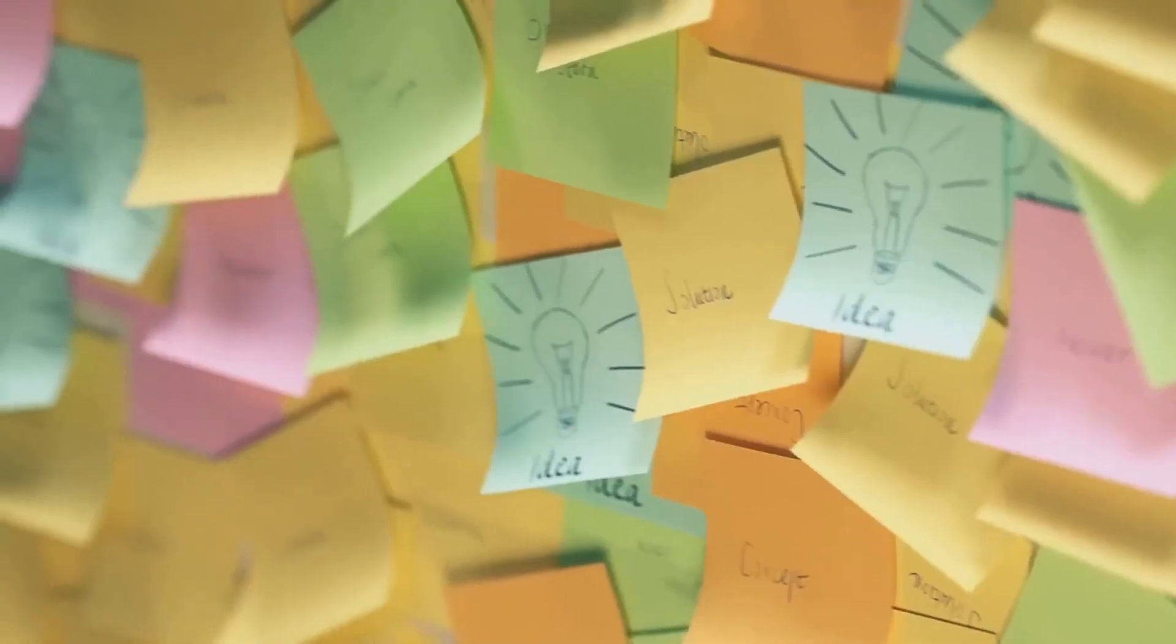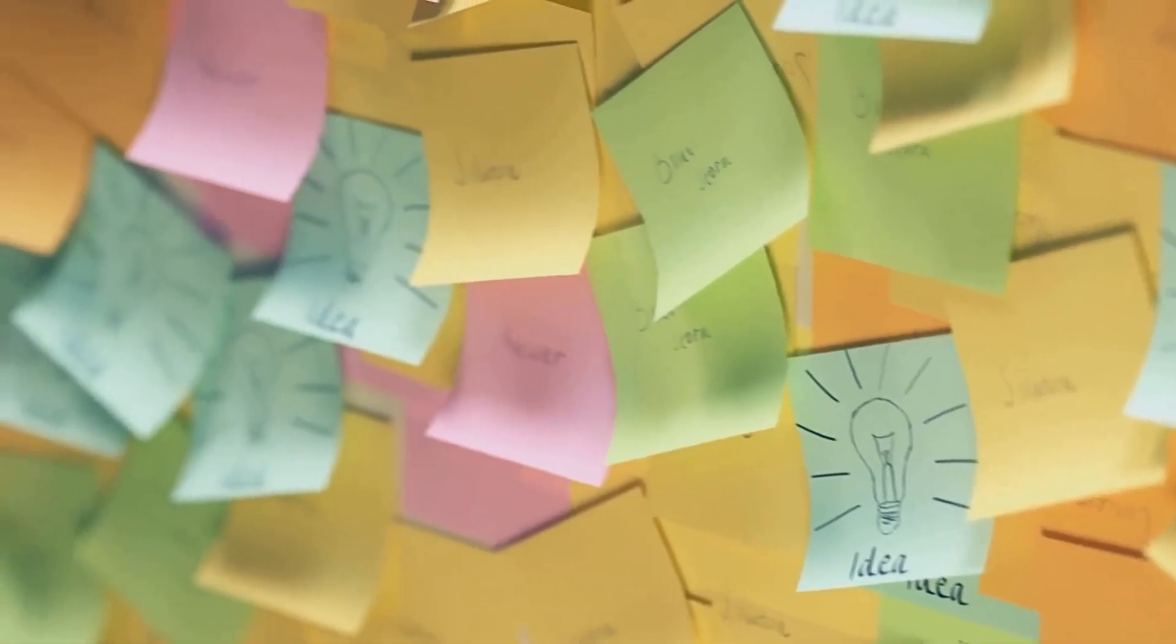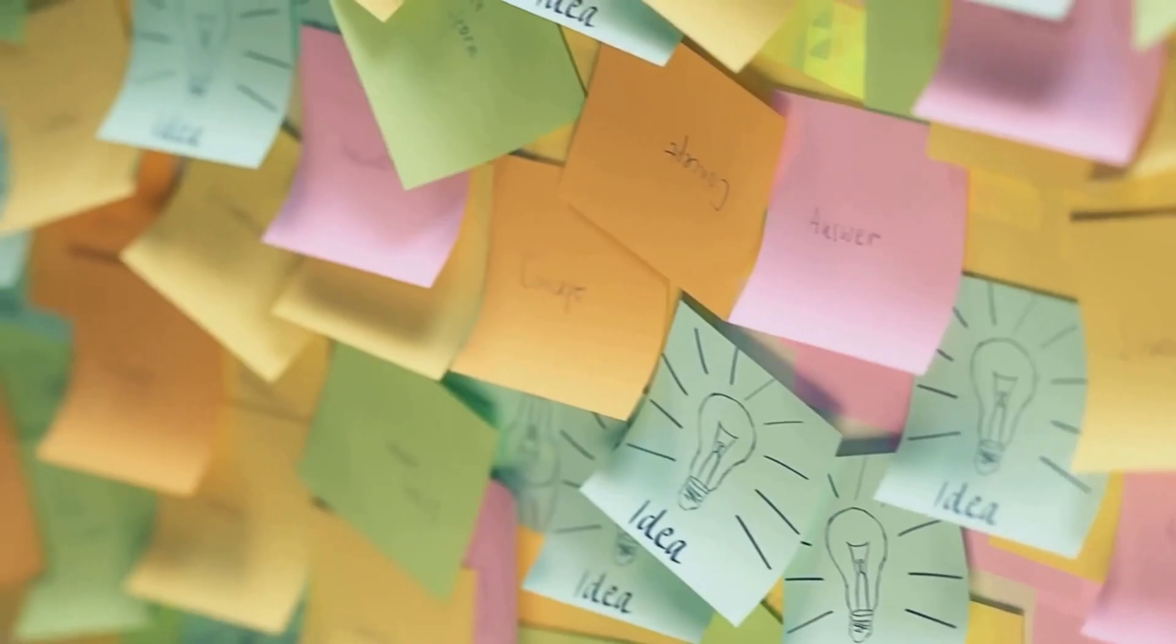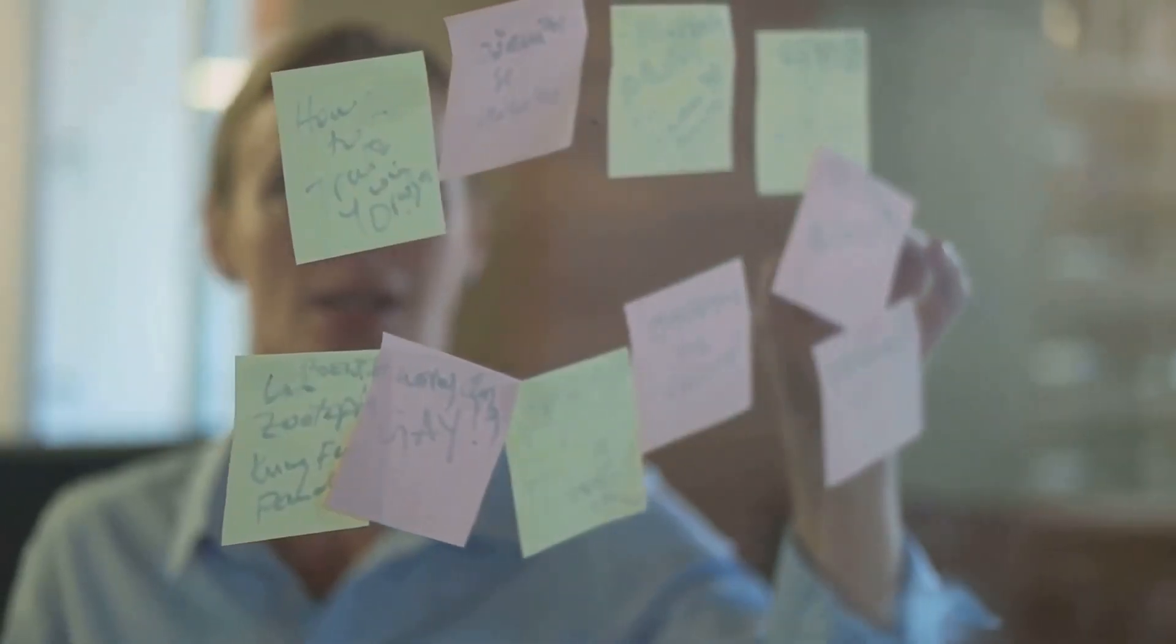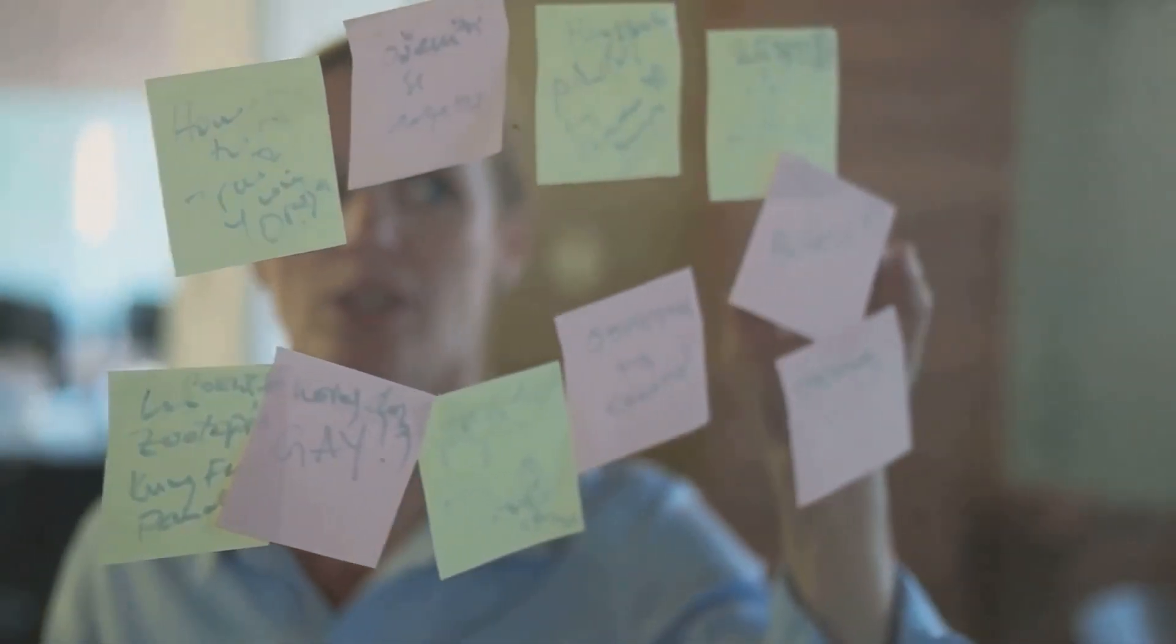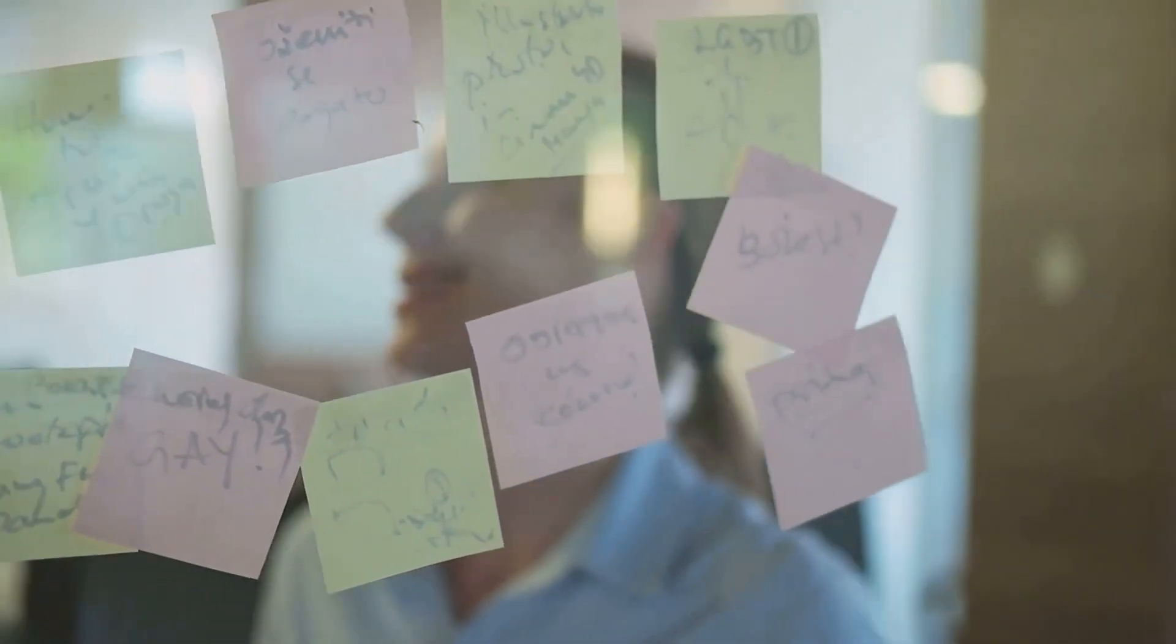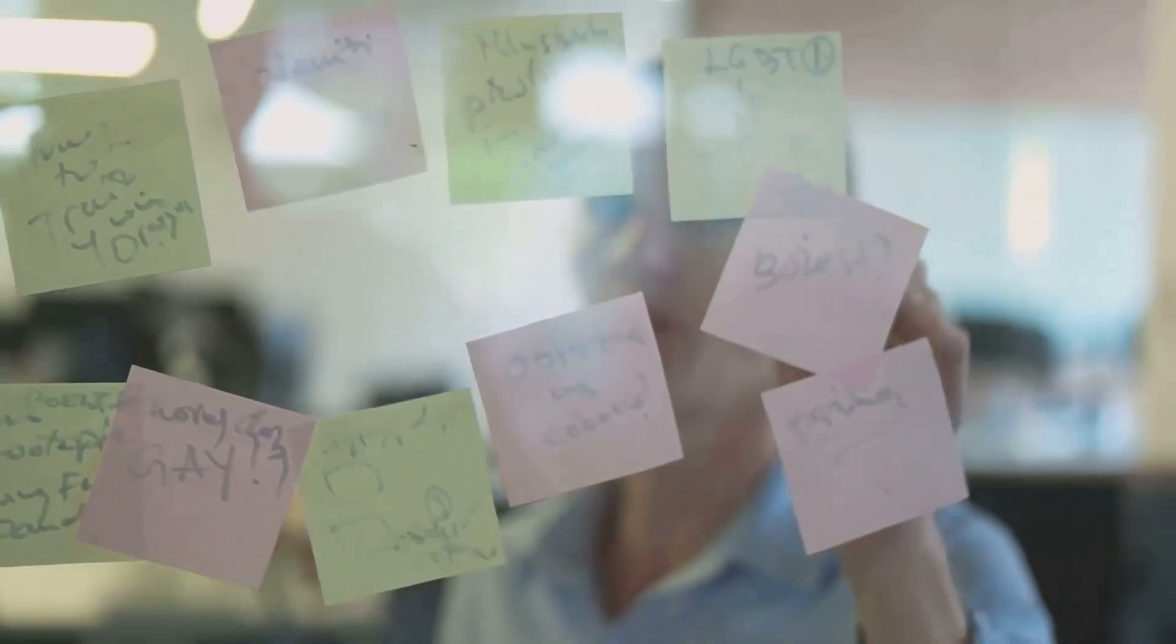We also delved into a step-by-step guide to creating a mind map. Starting with a blank canvas, we jot down a central idea, followed by associated ideas or tasks branching out. Colors and images can be used to distinguish between different topics and subtopics, making the information more engaging and easier to remember.